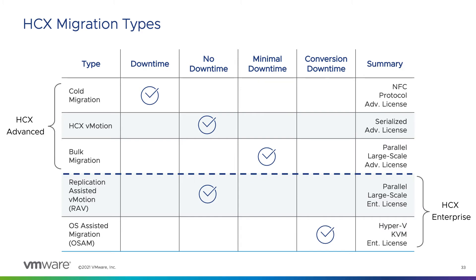With HCX Enterprise, we also introduce RAV, or replication-assisted vMotion, which combines bulk migration with vMotion, allowing you to schedule multiple VM migrations with zero downtime. We can also leverage OSAM, or OS-assisted migration, to migrate Hyper-V and KVM virtual machines and convert them to vSphere virtual machines.